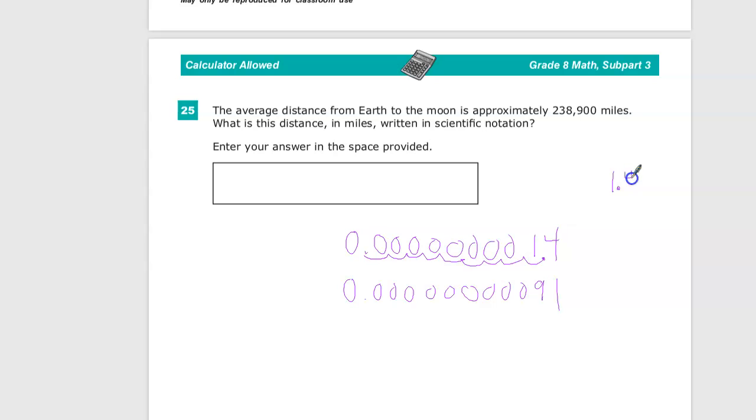So 1.4 times 10 to the, and I said one, two, three, four, five, six, seven, eight, nine, negative ninth. This tells me it's a very small number.